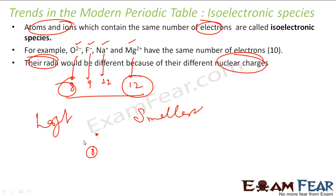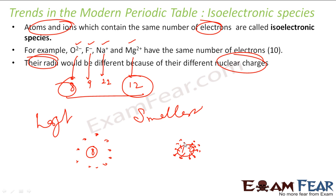So in this case, Mg²⁺ will be the smallest and O²⁻ will be the largest. Why? Because 12 protons can attract 10 electrons closely, whereas 8 protons will not be able to attract 10 electrons as easily, so the atom will expand. Just to understand the concept: if the nucleus charge is 12, it will attract the 10 electrons more powerfully; if it is 8, it cannot attract those 10 electrons as powerfully — so the size increases.